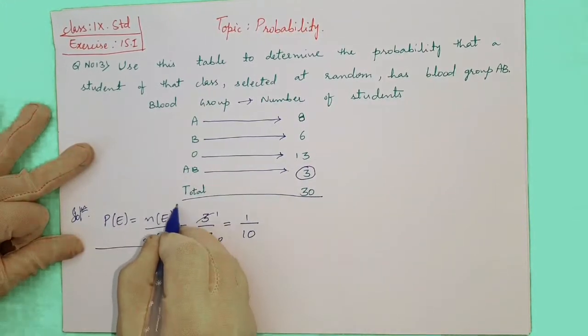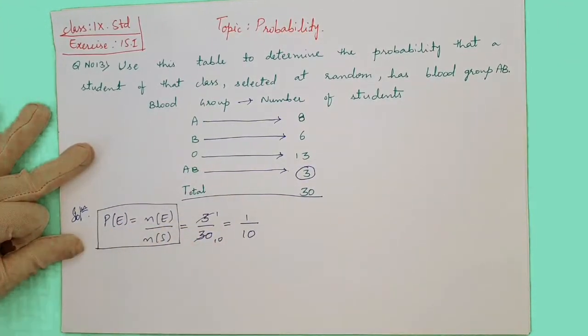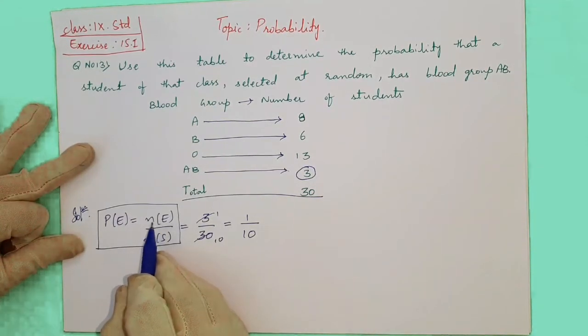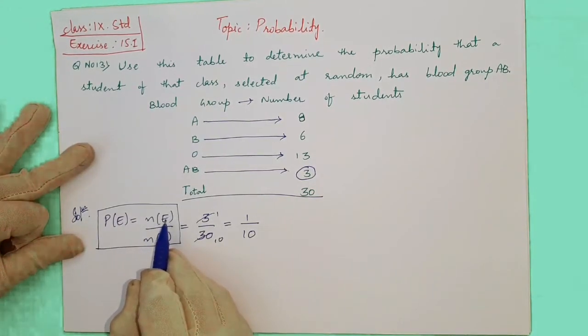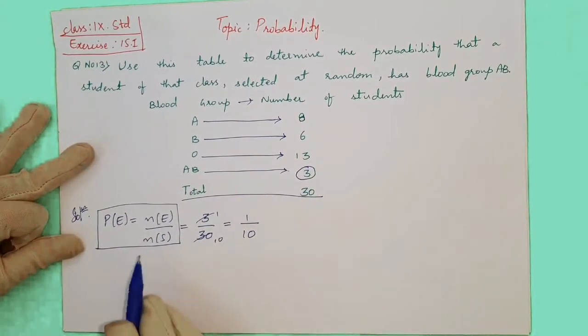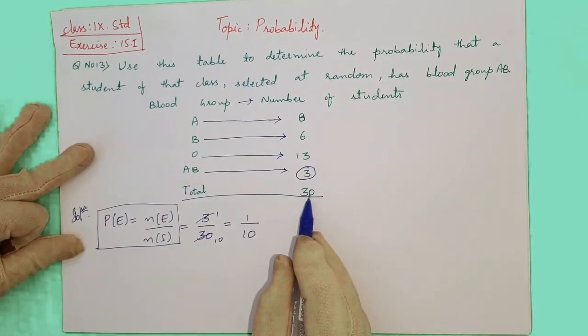Again, this formula you have to write in sentences in your exams and tests. The numerator is nothing but the number of students who are having blood group AB. The denominator is the total number of students, which is 30.